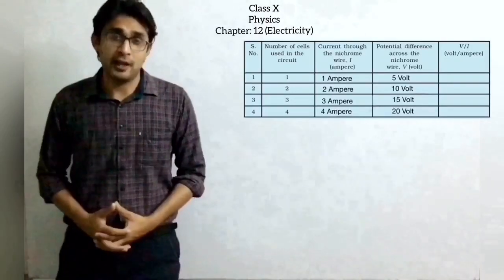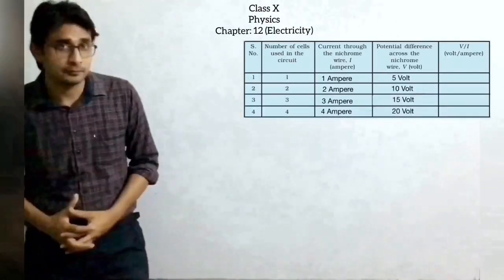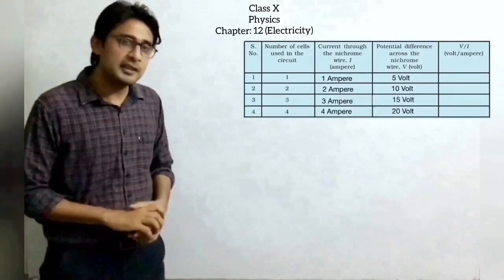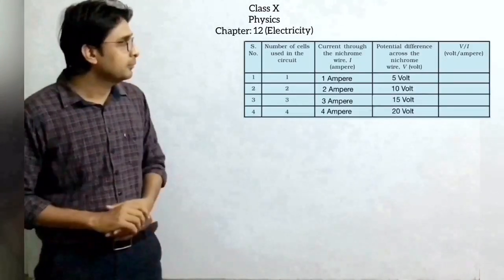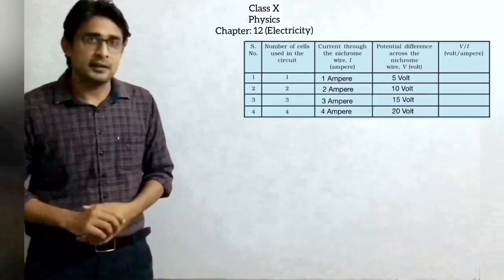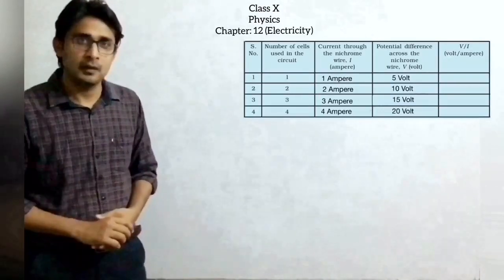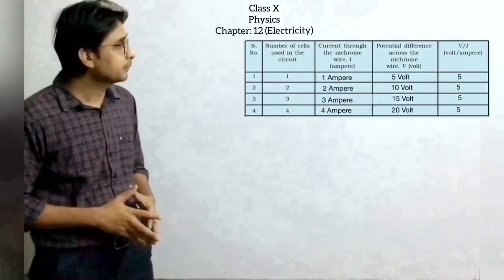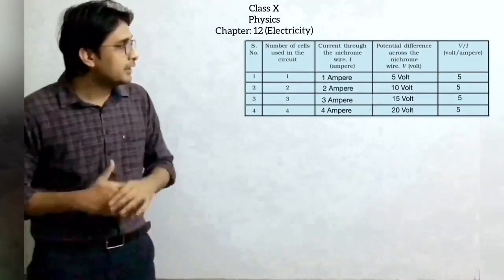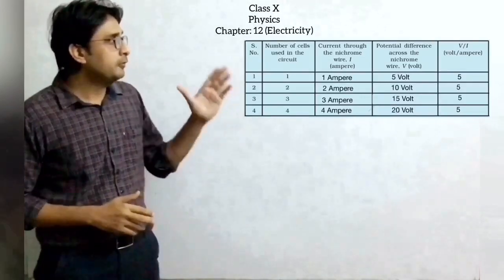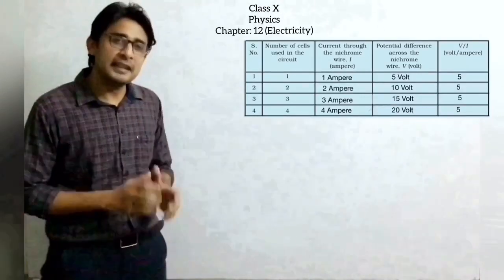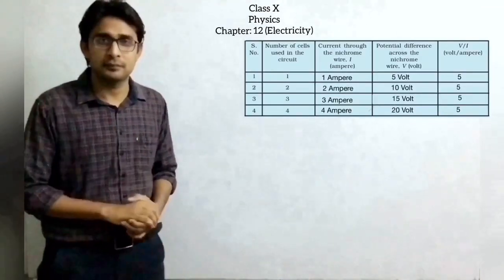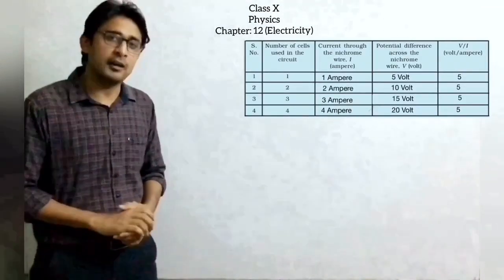Now we will draw a graph using this table. First we will complete the table. As you can see, the last column — V by I — is not yet filled. It is the ratio of potential difference and current flowing through the circuit. As you can see, the value of V by I for each trial is the same. What does this mean? We will find out after drawing the graph.